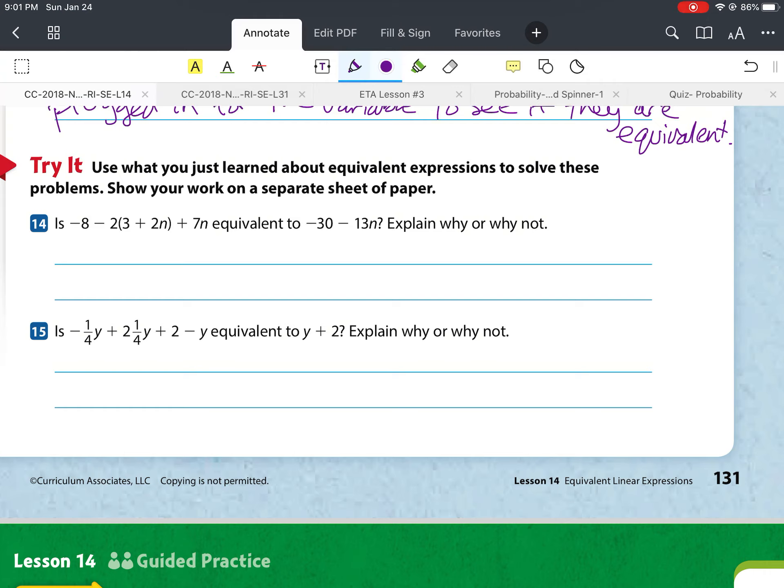Okay. Number 14, it says, Is negative 8 minus 2 times 3 plus 2n plus 7n equivalent to negative 30 minus negative 13n? Explain why or why not. All right. Let's first change the subtractions to addition, take the opposite, and then we'll start distributing and combining terms. So we've got negative 8 plus a negative 2 times positive 3. Negative times positive is a negative. And 2 times 3 is 6. And a negative times positive is a negative. 2 times 2 is 4n plus 7n. All right. Negative 8 plus negative 6 is going to be negative 14. And negative 4n plus 7n. They're unlike signs. We subtract a sign large number, so that would be a difference of 3n. Well, negative 14 plus 3n is not equivalent to negative 30 minus 13. So, not equivalent.